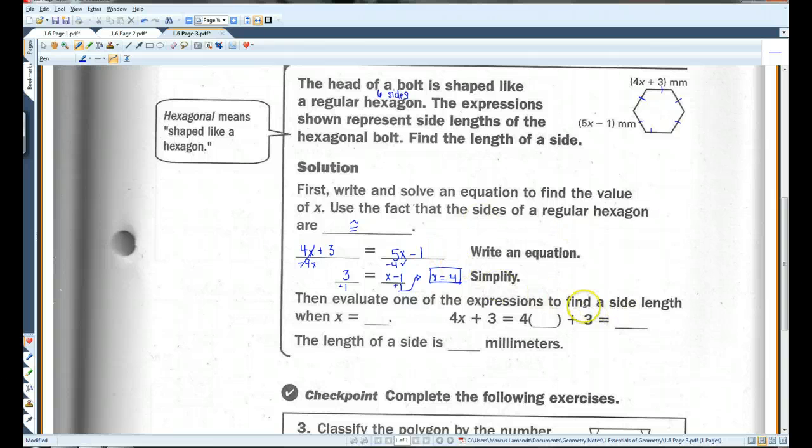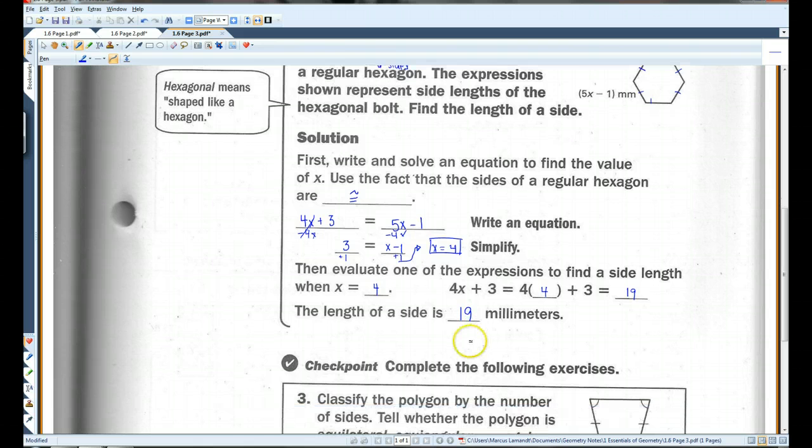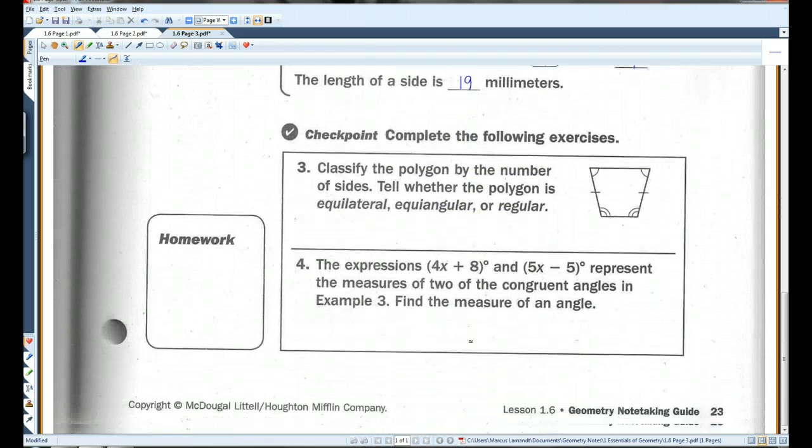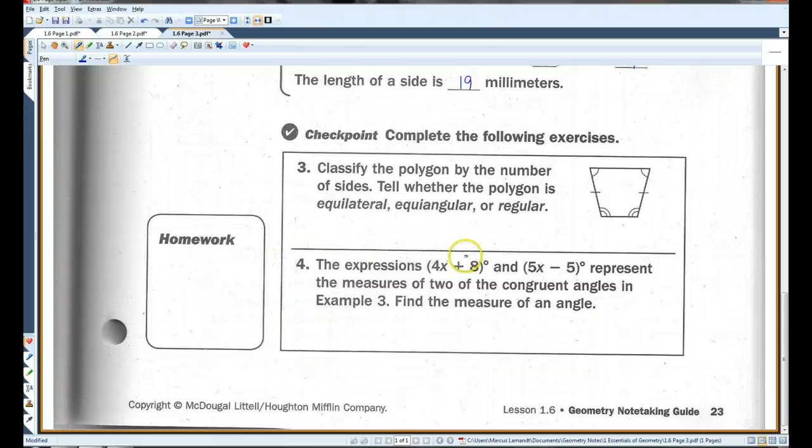Then evaluate one of the expressions to find a side length. So, we know that x equals 4. So, if I plug in 4 here into 4x plus 3, 4 times 4 is 16. 16 plus 3 is 19. So, the length of a side is 19 millimeters. All right. You guys can go ahead and try these two. And that's it for today.